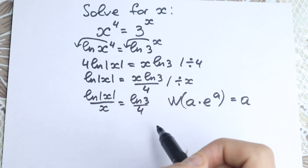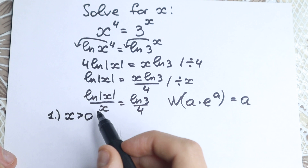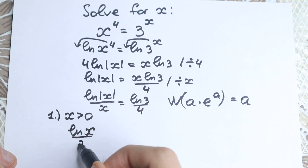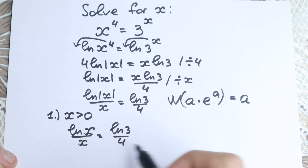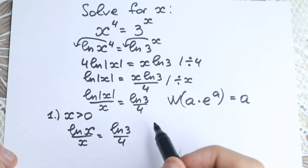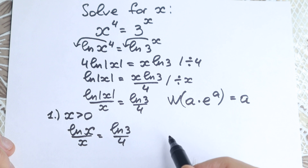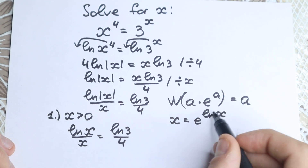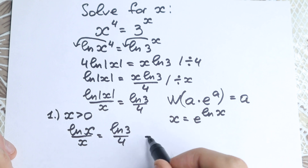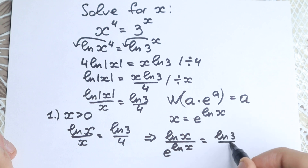When x is positive we have natural log x over x equal to natural log 3 over 4. To set up the Lambert W form we need to introduce e. We can write x as e to the power natural log x — since e and natural log cancel — so in the denominator we write e to the power natural log x. This gives us natural log x over e to the power natural log x, equal to natural log 3 over 4.